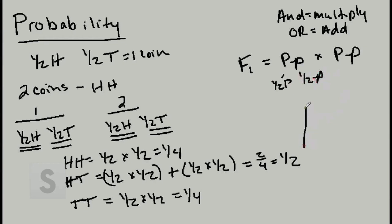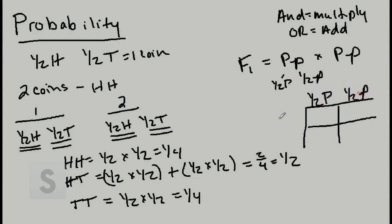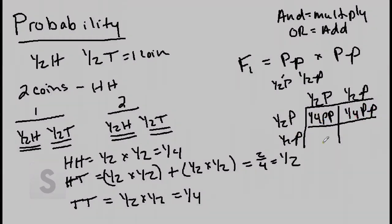If we draw this out in our Punnett square, for the first individual we have a half a chance of a big P and a half a chance of a little P. For the second individual, same thing. So the probability of getting big P, big P is one fourth. The probability of big P, little P is one fourth. The probability of little P, big P is one fourth. And the probability of little P, little P is one fourth.